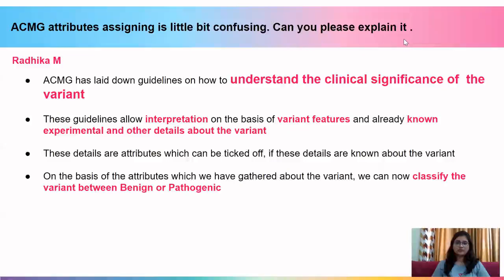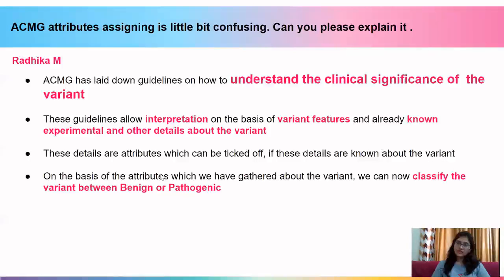Now let us look at the different questions asked by participants. The first question was by Radhika, who found ACMG attribute assignment confusing. ACMG has laid down guidelines to understand the clinical significance of variants. These guidelines allow interpretation on the basis of variant features and known experimental details. These details are attributes which can be ticked off. On the basis of these attributes we classify the variant as benign or pathogenic. We are going through available literature and trying to assign ACMG attributes based on evidence found in articles.